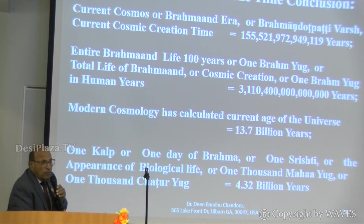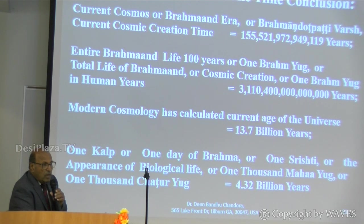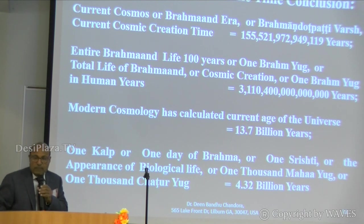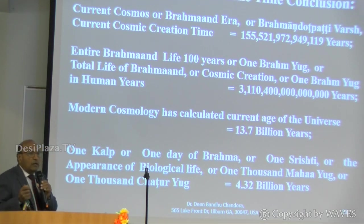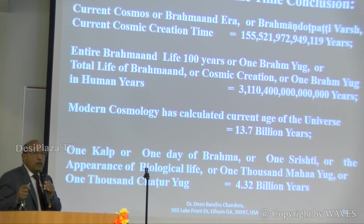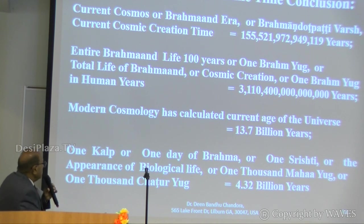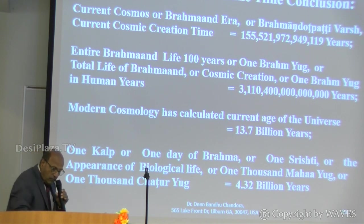Modern science can calculate what they are observing, but currently cosmic scientists have explored only one third of the universe. There is no other religion or dharma which comes close to calculations in billions of years. This is the only one where the calculations tell us about the total period of existence.